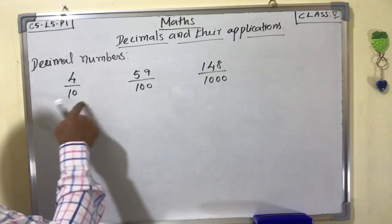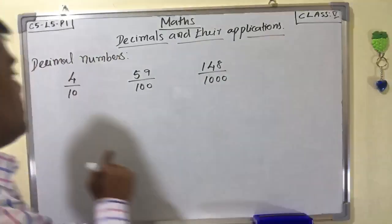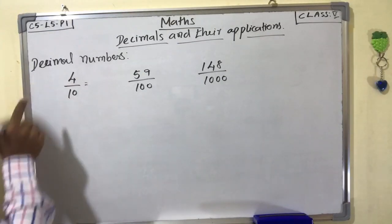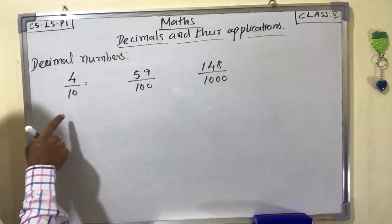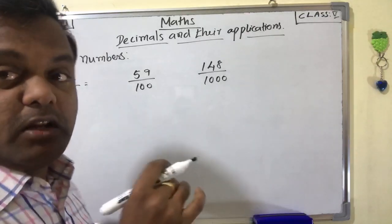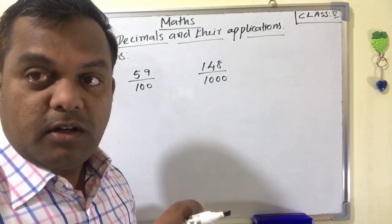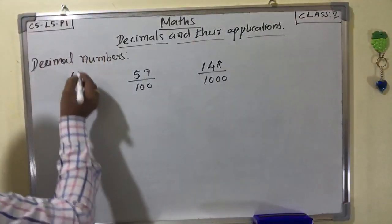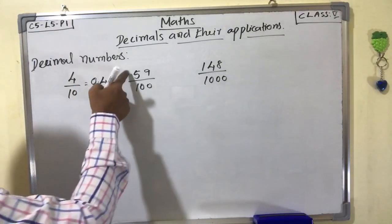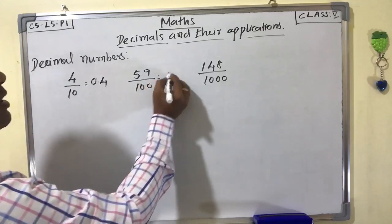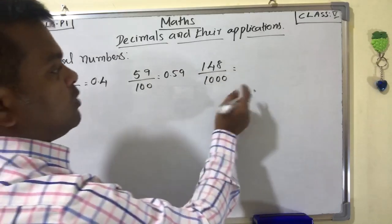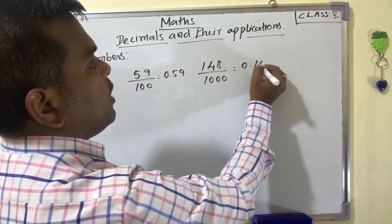Not only 10, 100, 1000, 10,000 and so on — but fractions with those as denominators are decimals. If you find the value of 4 by 10, this is 0.4. If you find the value of 59 by 100, this is 0.59. If you find the value of 148 by 1000, this is 0.148.